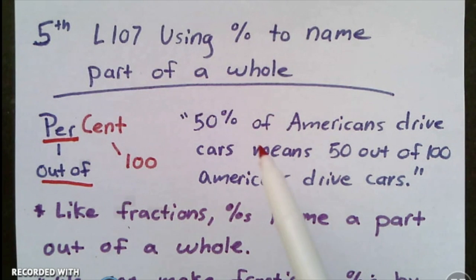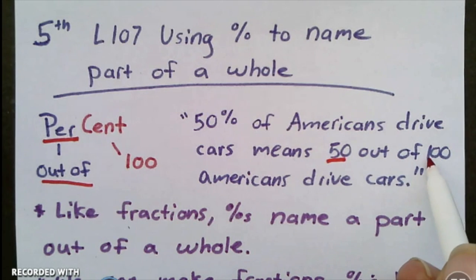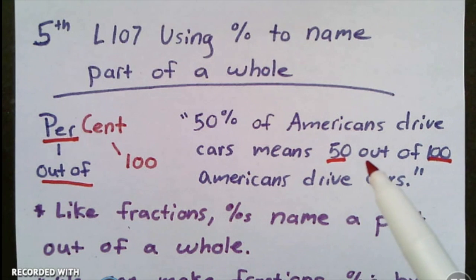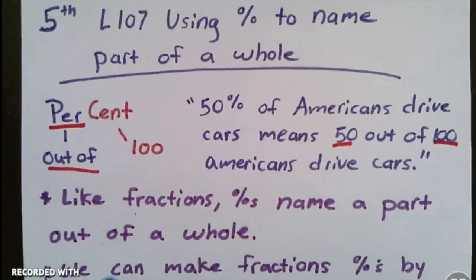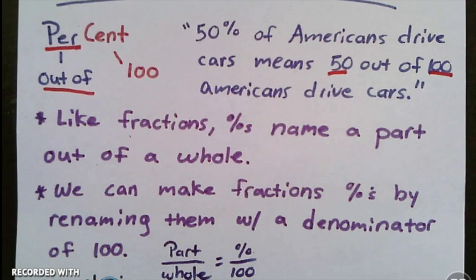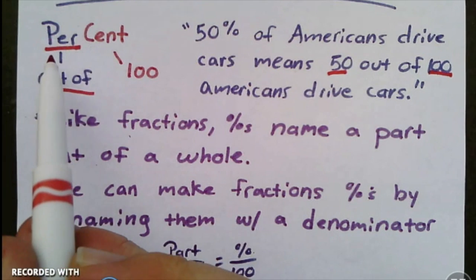In this question it says fifty percent of Americans drive cars, which means fifty out of a hundred Americans drive cars. There's more than a hundred Americans, right? We're breaking it down to mean out of a hundred to give us the percent, but it doesn't mean there's actually always a hundred of whatever objects we're talking about. Like fractions, percents name a part out of a whole. We can make fractions percents by renaming them with a denominator of a hundred.